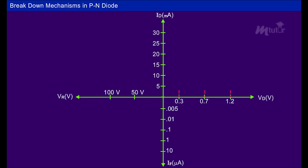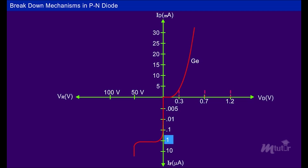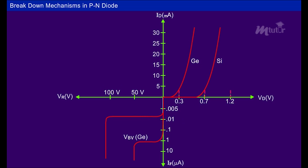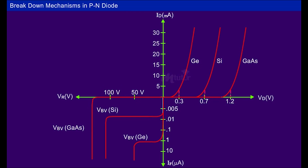This graph shows the breakdown voltage with respect to both forward and reverse bias for different semiconducting materials such as germanium, silicon, and gallium-arsenide. Germanium has a forward bias breakdown voltage of 0.3V and reverse bias of around 50V at 1µA. For silicon, the forward bias breakdown voltage is 0.7V and reverse bias is around 100V at 10µA. Gallium-arsenide has a forward bias breakdown voltage of 1.2V and reverse bias of more than 100V at less than 5µA.